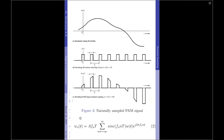To provide an equation, the natural sampled signal W_s(t) equals a·f_s·T times the summation of sinc(f_s·n·T) multiplied by W(t) times e^(j2π·f_s·n·t), where a is the amplitude of the pulse train, f_s is the sampling frequency, and T is the width of each pulse. This was already discussed in a previous video titled 'Natural Sampling Process.' I would like you to kindly refer to that video for more information on how this expression was derived.